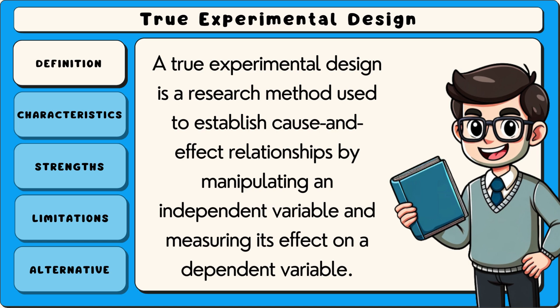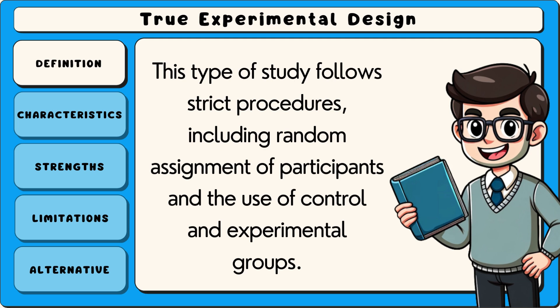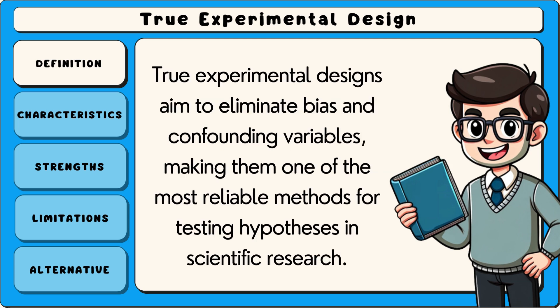A true experimental design is a research method used to establish cause and effect relationships by manipulating an independent variable and measuring its effect on a dependent variable. This type of study follows strict procedures, including random assignment of participants and the use of control and experimental groups. True experimental designs aim to eliminate bias and confounding variables,